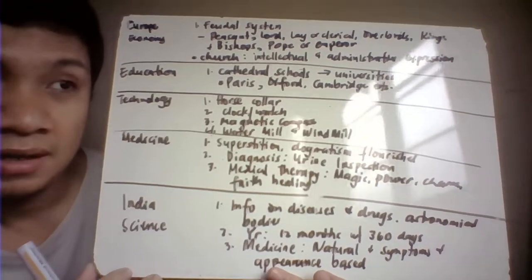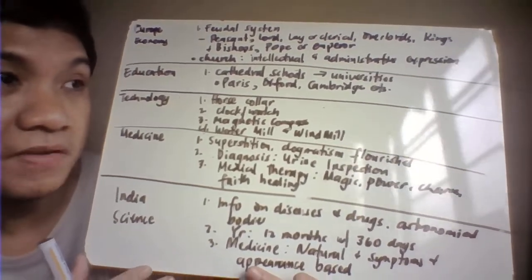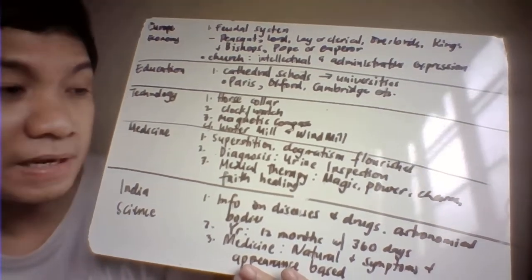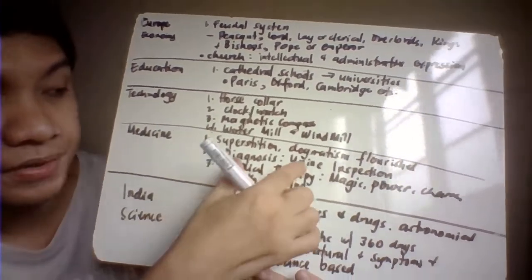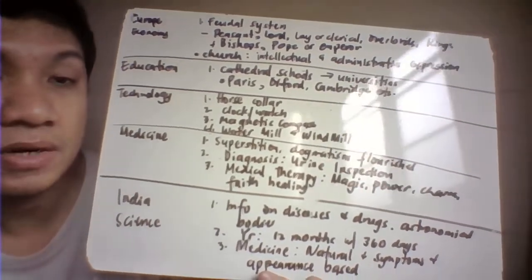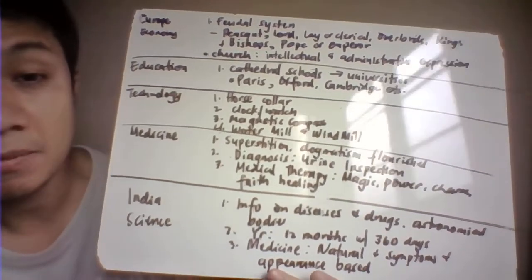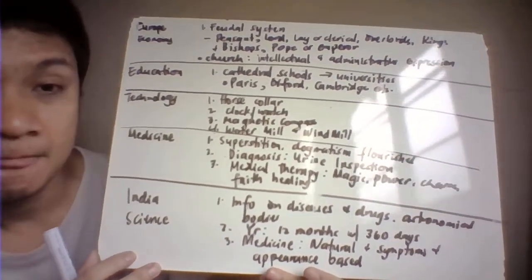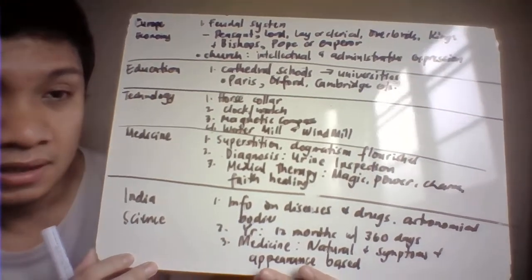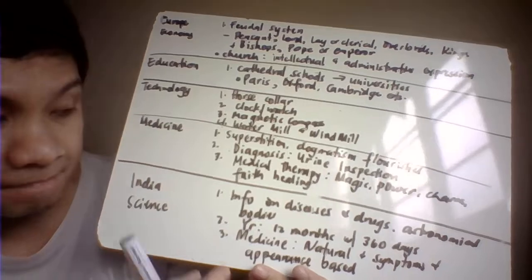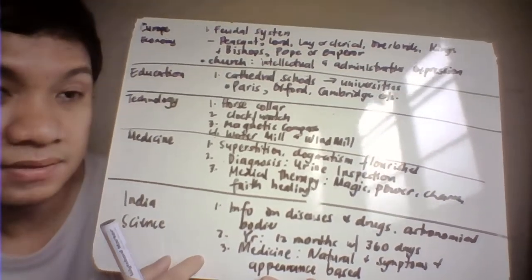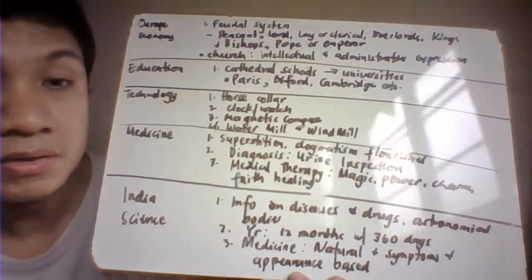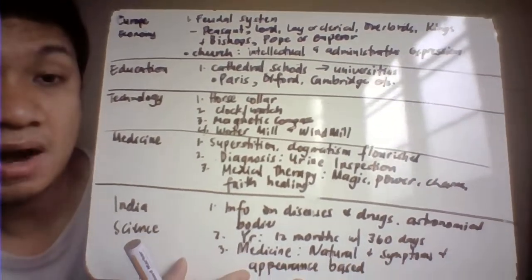For medicine in medieval Europe, superstition was widespread. Faith healing, charms, magic, and supernatural beliefs were prevalent. Diagnosis of patients was done by examination of urine samples. For the Indian civilization, they had information regarding diseases, drugs, and astronomical bodies. The year was divided into 12 months and 360 days. For medicine, they were more natural-based, not believing in the supernatural, and tended to diagnose based on signs and symptoms of their patients.